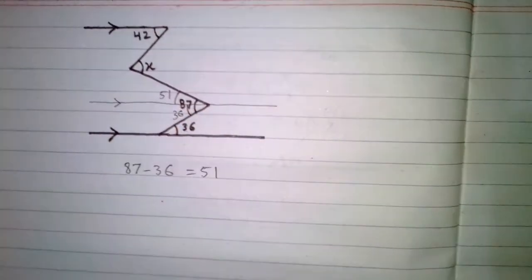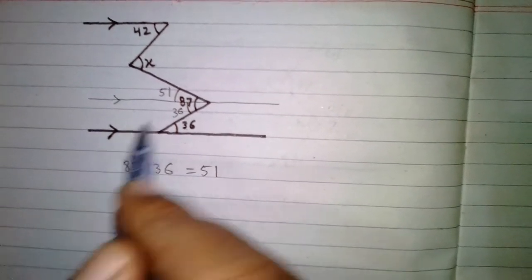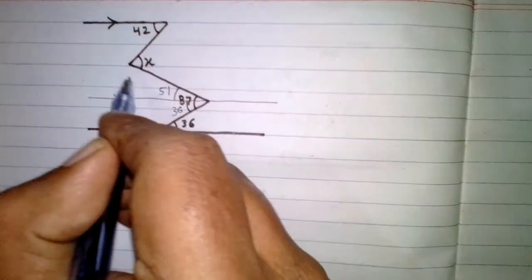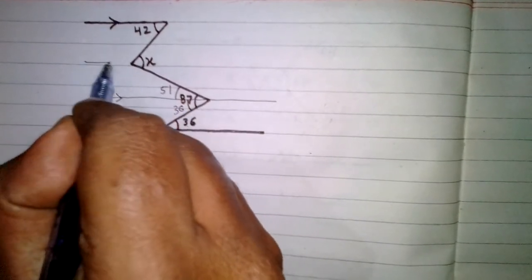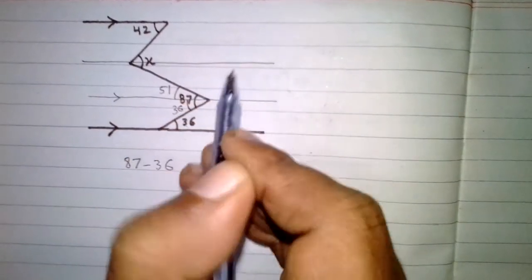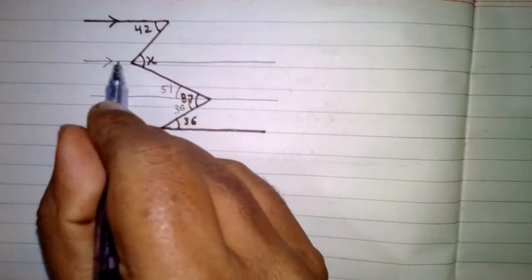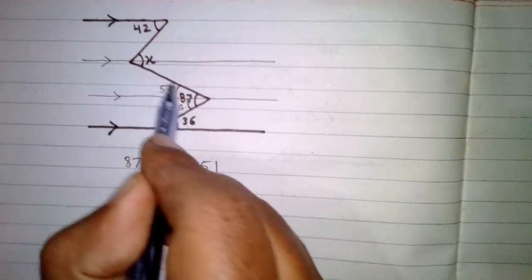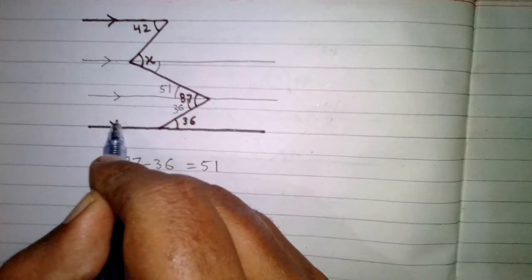So this angle is 51. Now we can draw a line parallel to this line passing from this point, and we can see that these two lines are cut by a transversal.